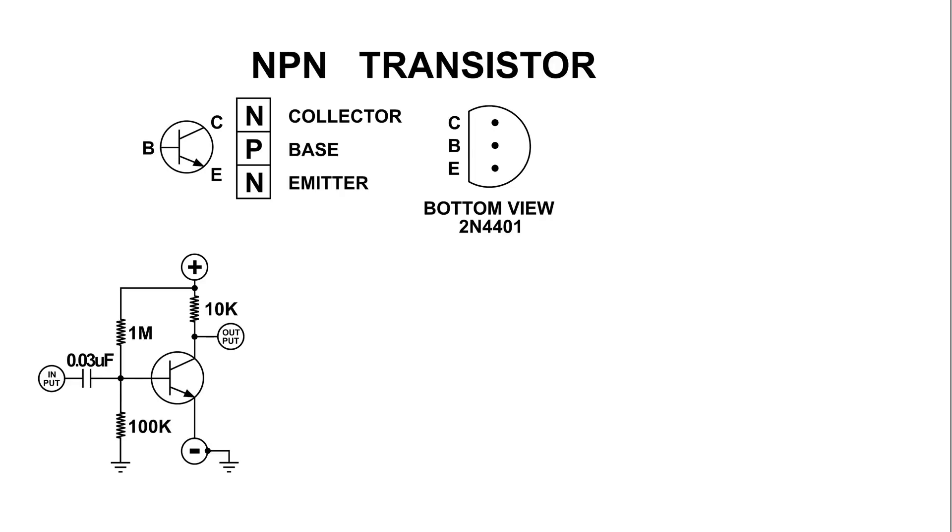As we saw from the video, the 2N4401 has a beta of about 200. The 2N3904 has a beta of about 324, and the BC547C has a beta of about 450.